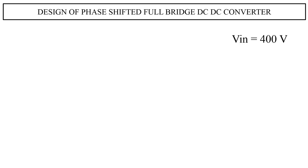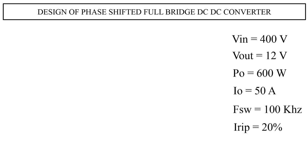Input voltage is 400 volts. Output voltage is 12 volts. Rated power 600 watts. Output current is 50 amps. Switching frequency is 100 kilohertz. Current ripple is 20 percent. Voltage ripple is 1 percent.